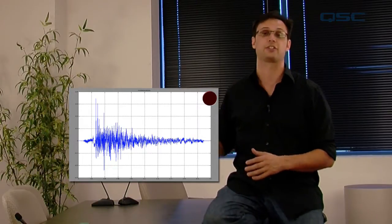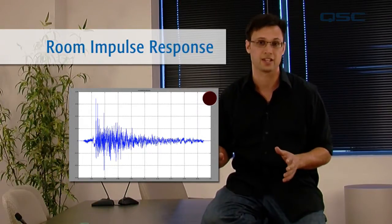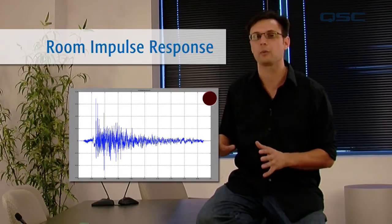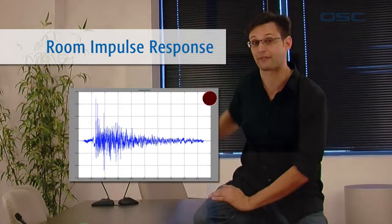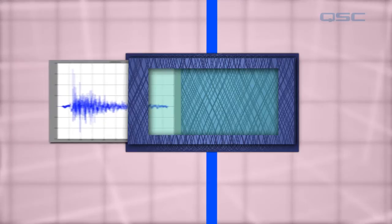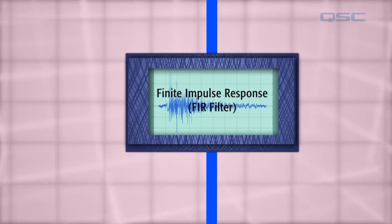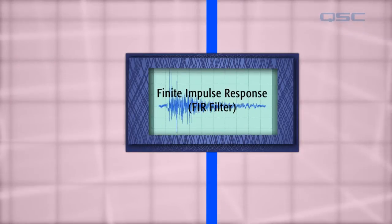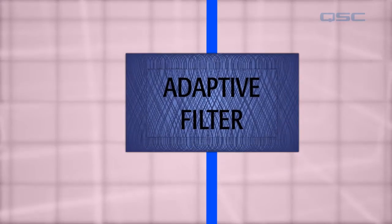This image is known as the room impulse response, and it's a predictive map of what will happen to any noise that comes out of that loudspeaker. This room impulse response is used to create a finite impulse response, or FIR filter, here in the adaptive filter part of the AEC system.